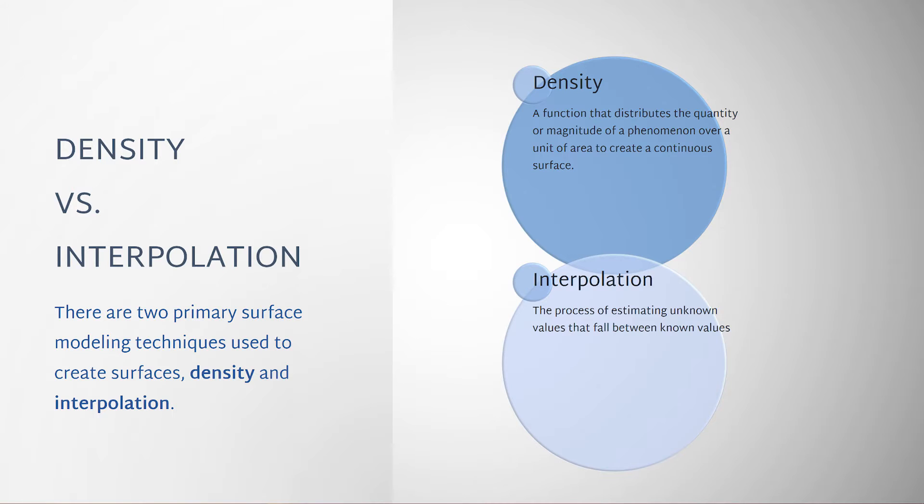Examples of themes modeled by a density surface include population, crime, or disease represented by magnitude over an area.